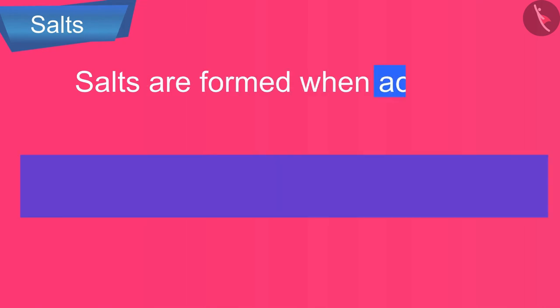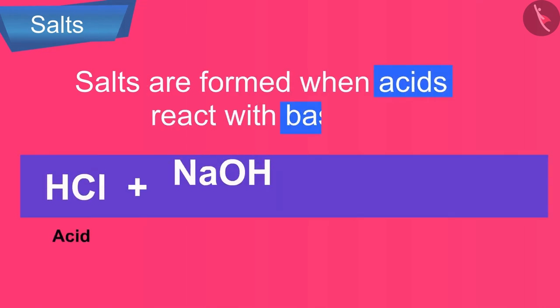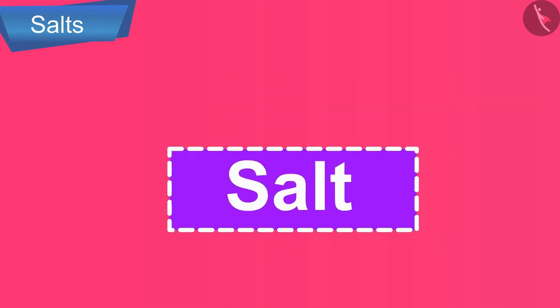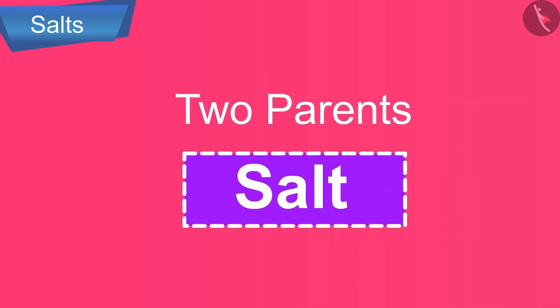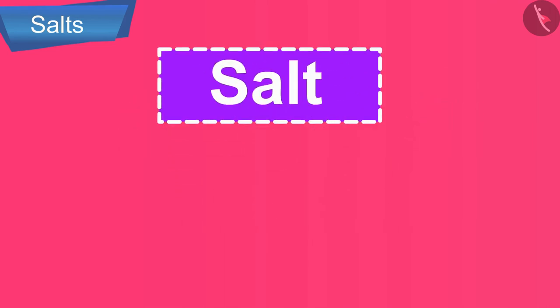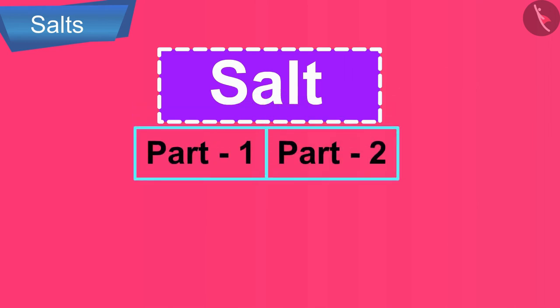Salts are formed when acids react with bases. In a way, we can say that a salt has two parents: an acid and a base. So the name of a salt consists of two parts.